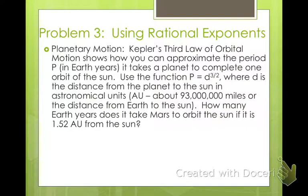Alright, planetary motion. Kepler's third law of orbital motion shows how you can approximate the period p in Earth years. It takes a planet to complete one orbit of the Sun. Use the function p equals d to the 3/2 power, where d is the distance from the planet to the Sun in astronomical units. And just so you're aware, an AU is about 93 million miles, or the distance from the Earth to the Sun.